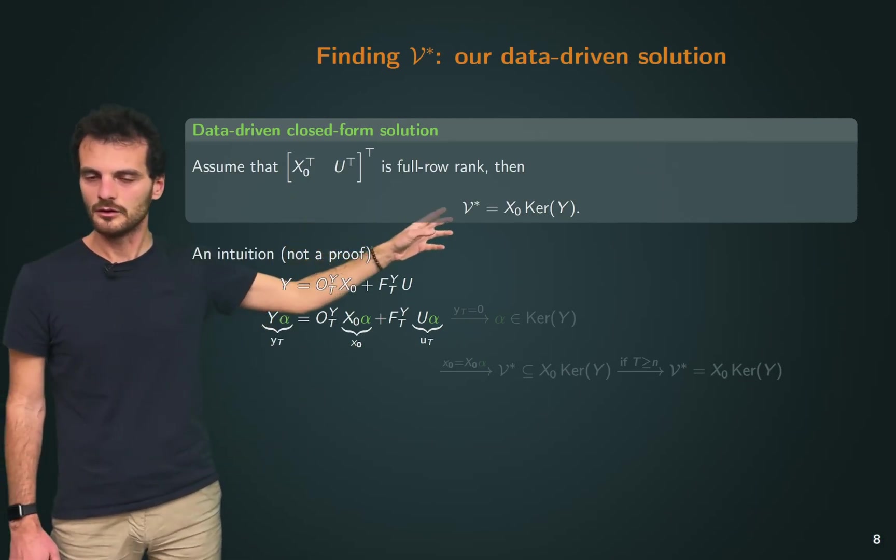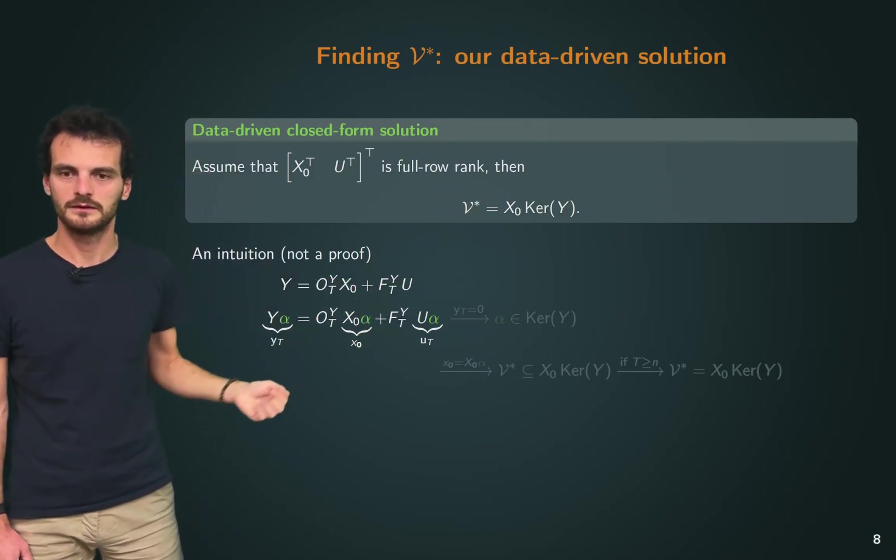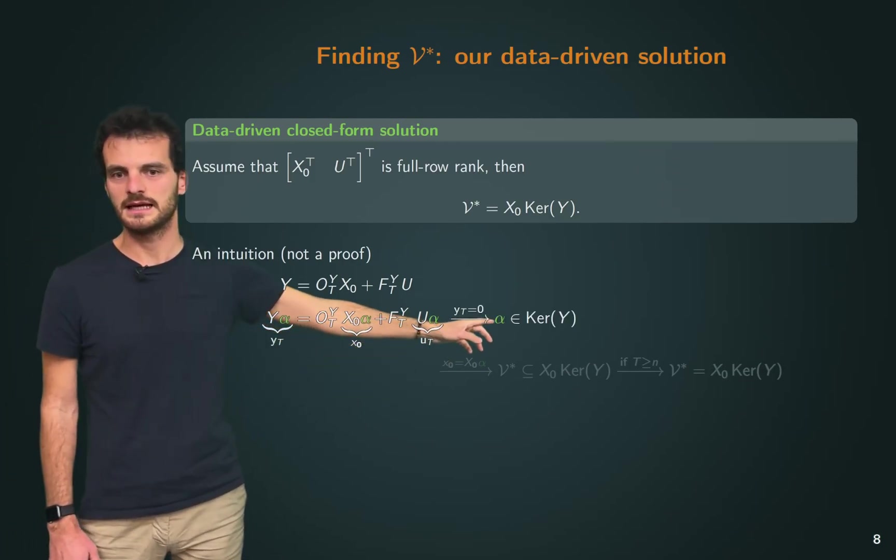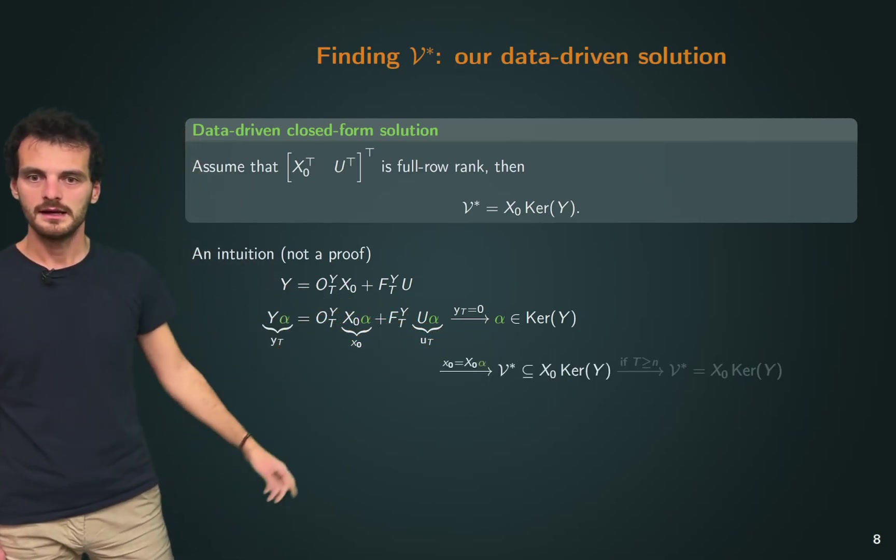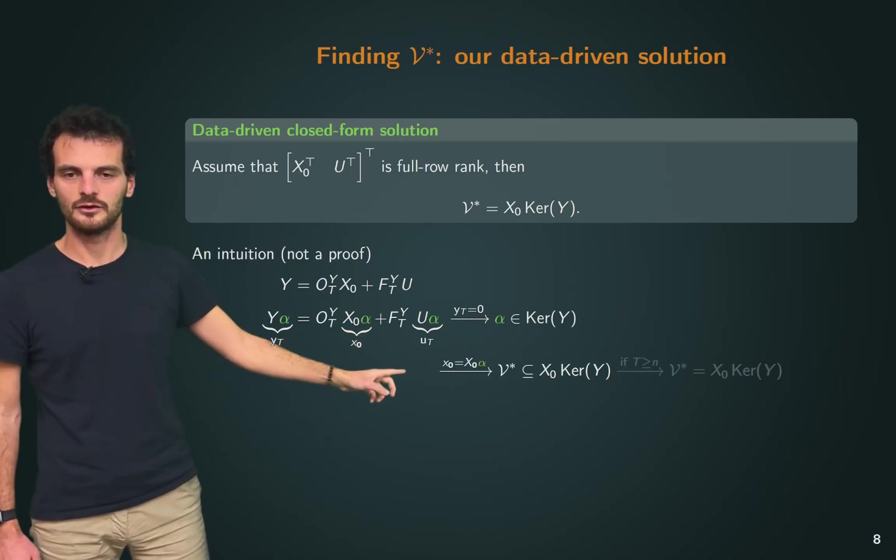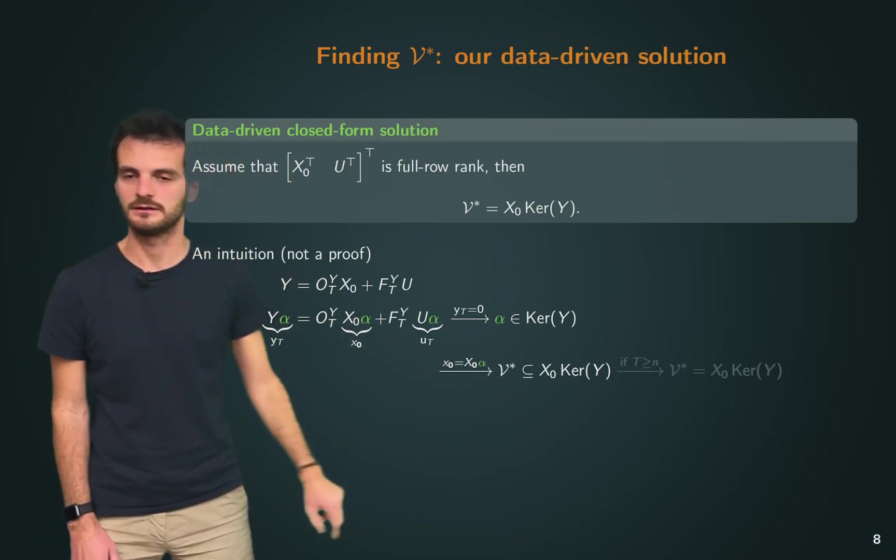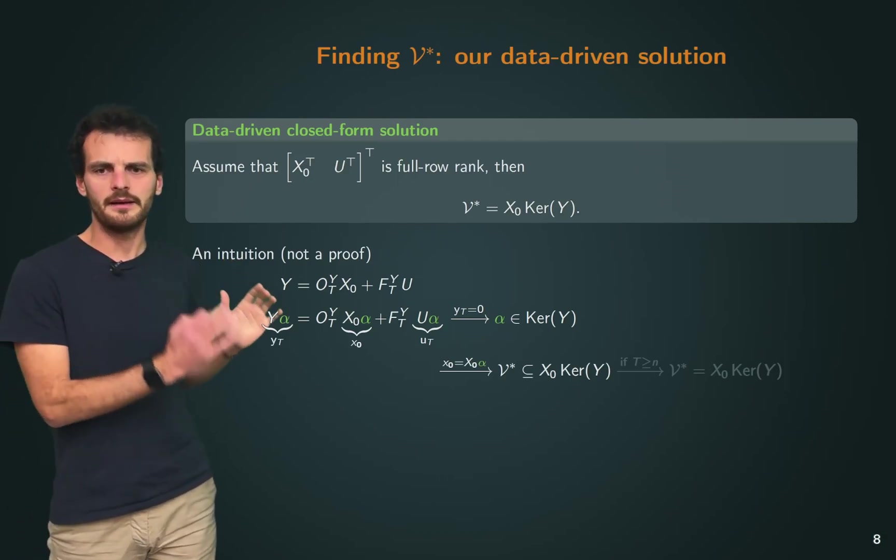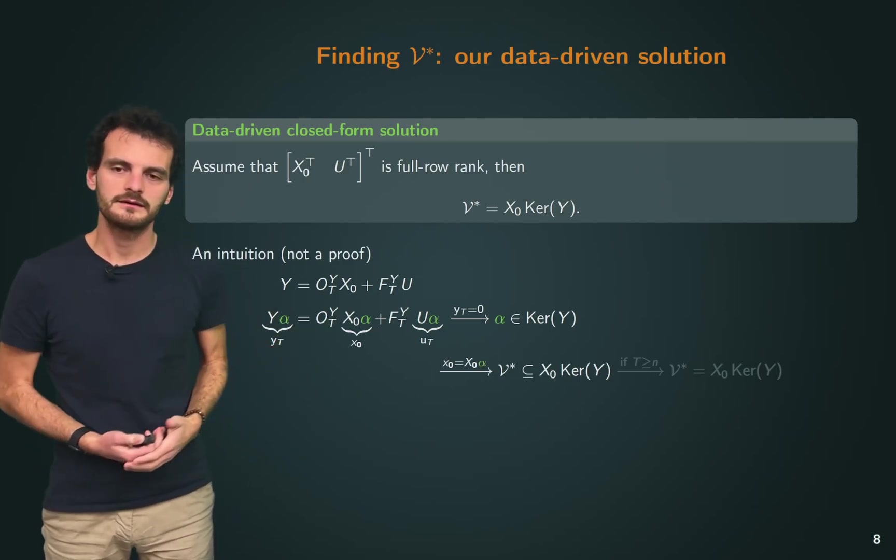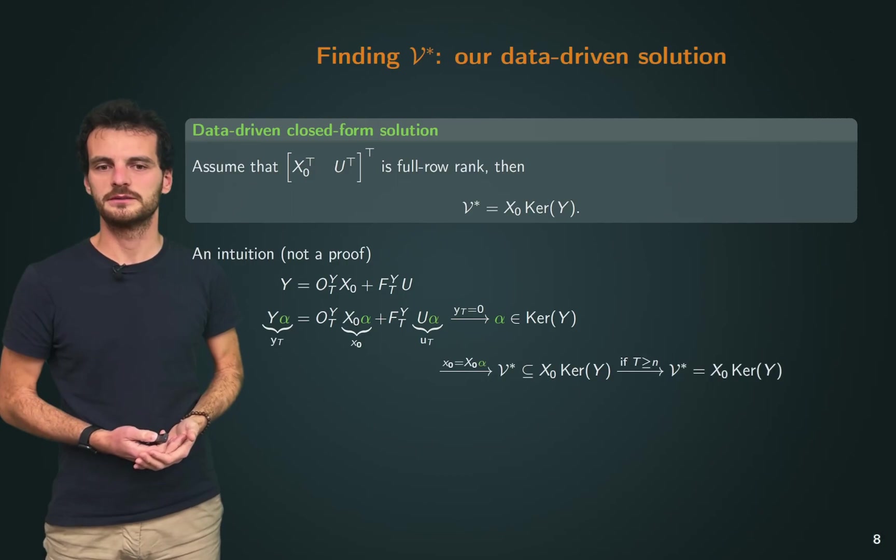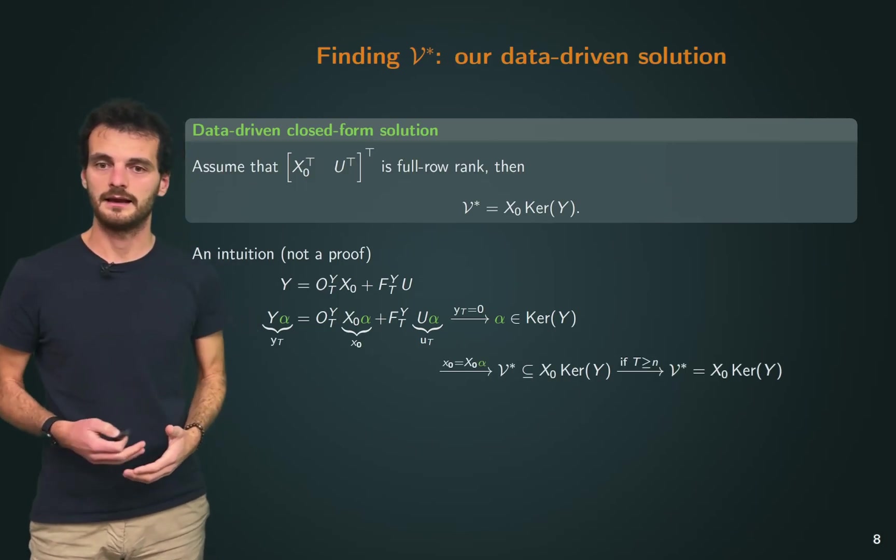Since we know that V* is always invisible at the output, then a necessary condition is that y(t) needs to be 0. Therefore, alpha needs to belong to the null space of Y. Also, we know that the initial condition is x_0 times alpha. So we know that, for sure, V* has to be a subset of x_0 times the null space of Y. And this is, I believe, a very intuitive and straightforward result. We need to go into a bit more details, and I encourage you to take a look at the paper to actually prove that V* is equal to that subspace as long as T is greater or equal than n.